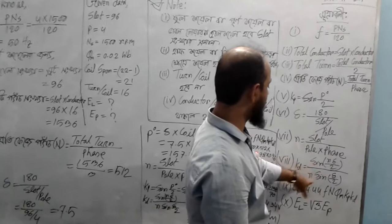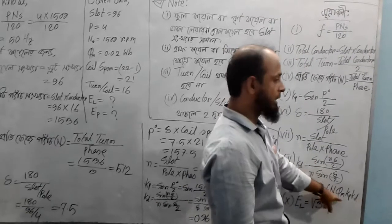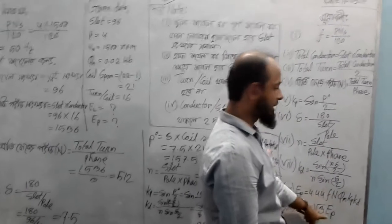Kt is equal to sine n del by 2, N sine del by 2. Ep is equal to 4.48 and 5.n kp kt. El is equal to root 3 Ep.